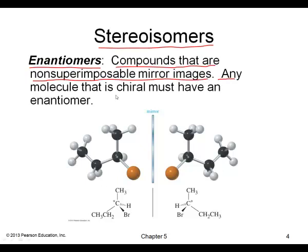Any molecule that is chiral must have an enantiomer. For example, if we take 2-bromobutane and focus on its chiral carbon, then take its mirror image, and if you try to rotate it and place it on top of the original, you would find it's different. So these two molecules are enantiomers — non-superimposable but mirror images.